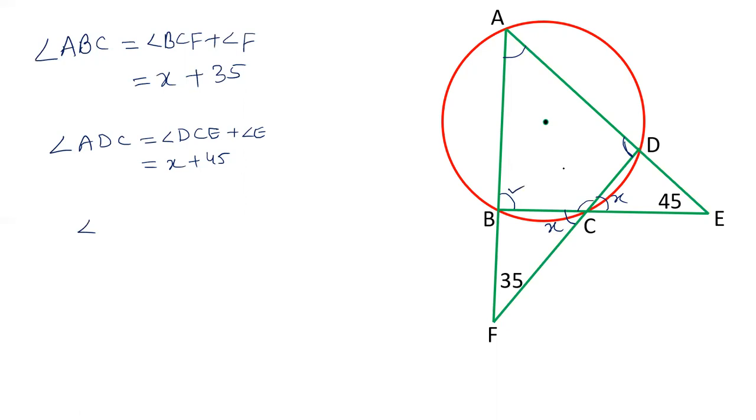Now, as I told you, these two angles, angle B and D of cyclic quadrilateral are supplementary. Angle ABC and angle ADC are supplementary. That is, they equal 180.